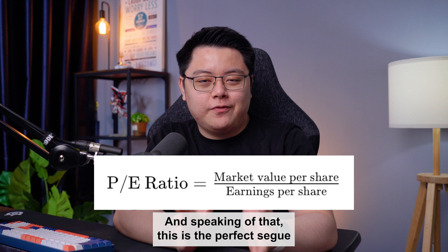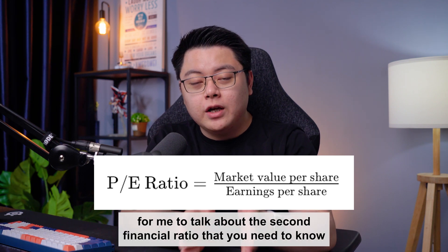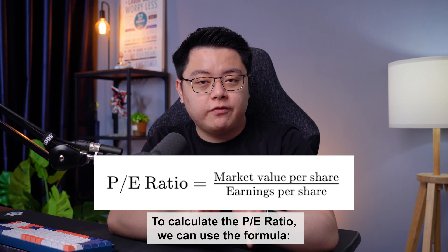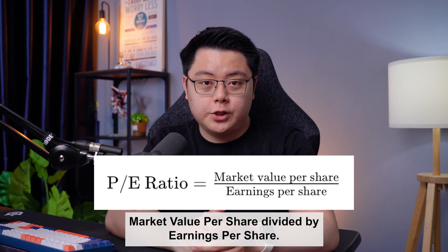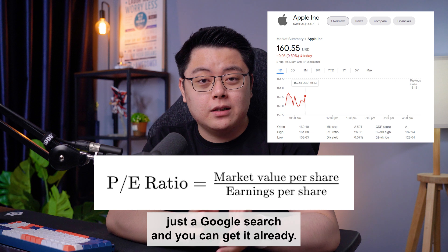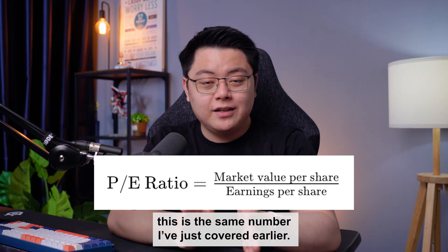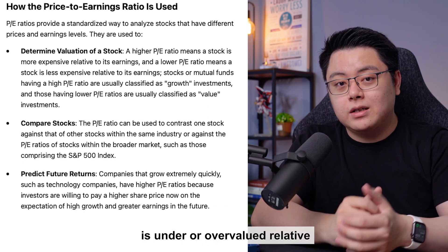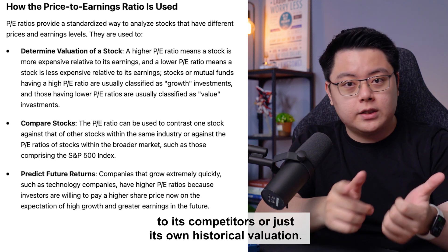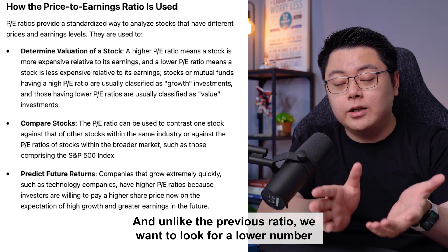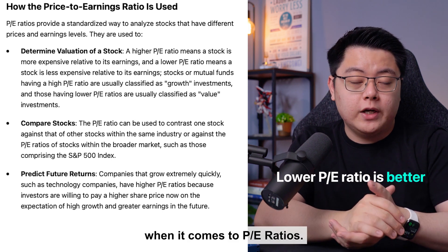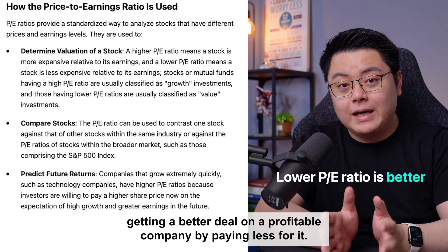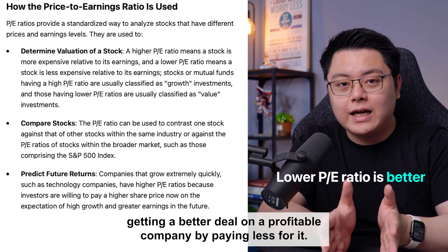This is the perfect segue to talk about the second financial ratio: the price to earnings PE ratio. To calculate the PE ratio, use the formula: market value per share divided by earnings per share. This ratio is often used by investors to determine if a company is under or overvalued relative to its competitors or its own historical valuation. Unlike the previous ratio, you want to look for a lower number when it comes to PE ratio — the lower the price to earnings, the better, as you are getting a better deal on a profitable company by paying less for it.